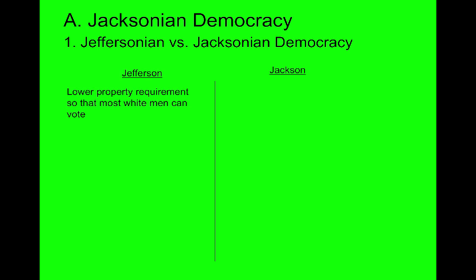Before we talk about Jacksonian democracy, let's go back to Jeffersonian democracy. Jeffersonian democracy was the idea that men should be more involved in government — not just any men, but the common men. Jefferson said we should lower property requirements so that most white men can vote. Before Jefferson, America was controlled by elite citizens; you had to have a fairly large amount of property to vote, because only educated, taxpaying people should have a say in government.